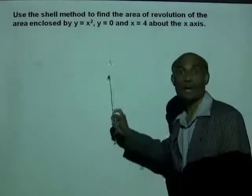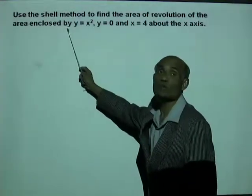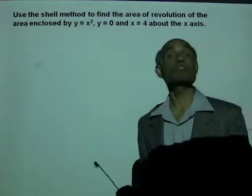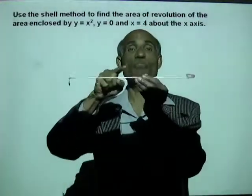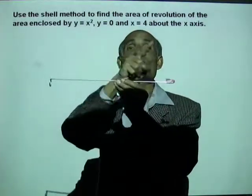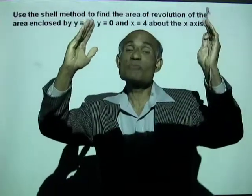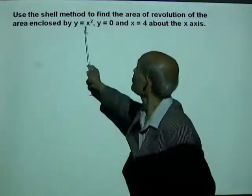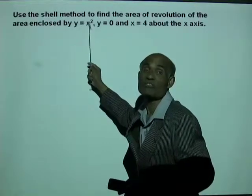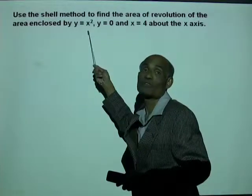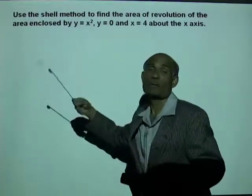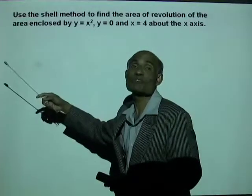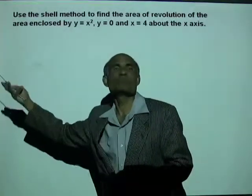Now use the same area — enclosed by y = x², y = 0, and x = 4 — but revolve it about the x-axis. To revolve about the x-axis, take the area parallel to the x-axis, so functions must be written as functions of y. Solve y = x² for x: x = √y (taking the positive part).